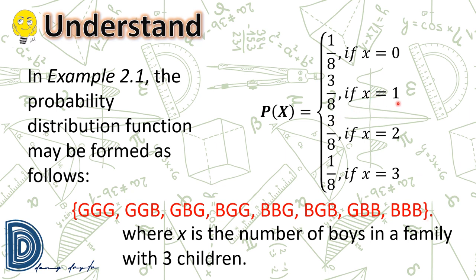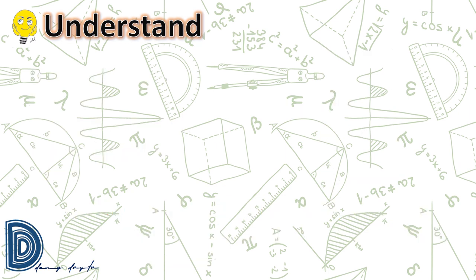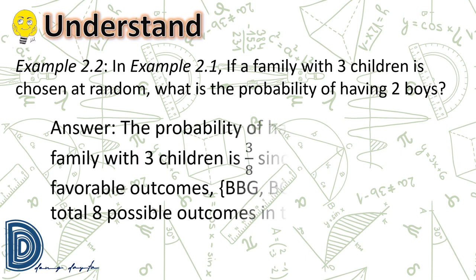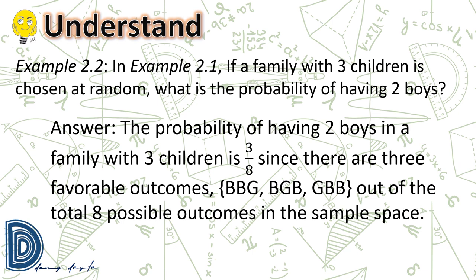Continuing with example 2.1: if a family with three children is chosen at random, what is the probability of having two boys? The answer is 3/8, since there are three favorable outcomes — BBG, BGB, GBB — out of the eight possible outcomes in the sample space.